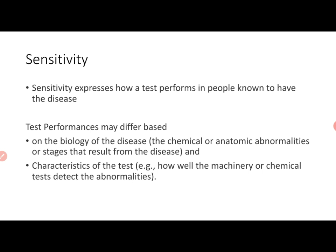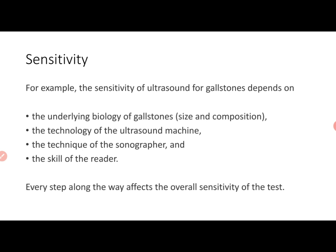Sensitivity expresses how a test performs in people known to have the disease — in all the people with the disease, it tells you how many test positive. Test performance can differ based on the biology of the disease, the chemical or anatomical or structural abnormalities, even the stages of disease. It can also differ based on the characteristics of the test — how well the machinery or chemical test detects abnormalities. For example, the sensitivity of ultrasound for gallstones depends on the underlying biology, the size and composition of gallstones, the technology of the ultrasound machine, the technique of the sonographer, and the skill of the reader.